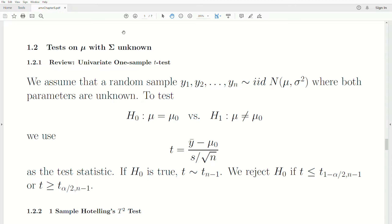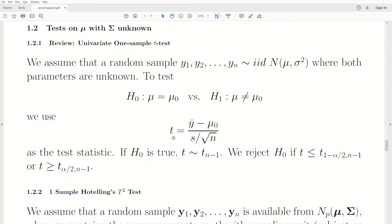Let's review the univariate one-sample t-test first. We assume we have a random sample from 1 to n, their IID, which stands for Independent Identically Distributed Normal Variables, mean mu variance sigma squared, where both parameters are unknown. We want to test is the mean mu naught versus that it's not mu naught. We'll use a t-test statistic, which is the sample mean minus the hypothesized mean divided by the standard error of the mean, which is the standard deviation divided by the square root of n.